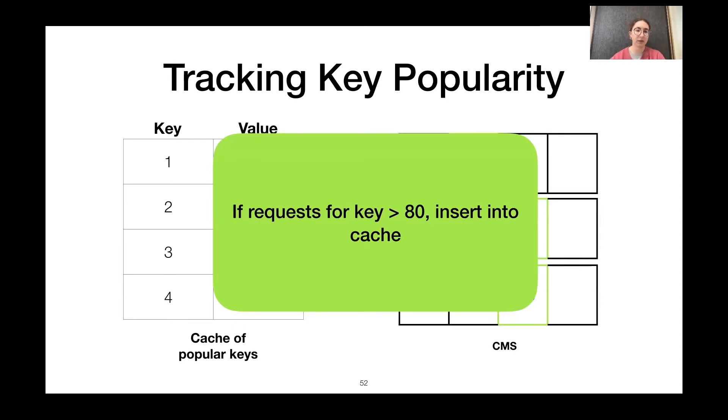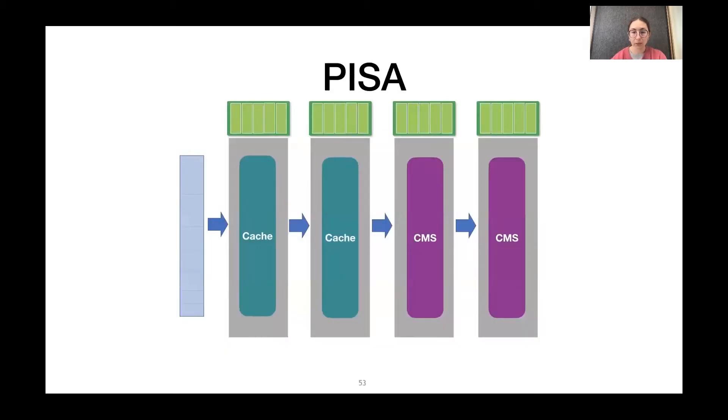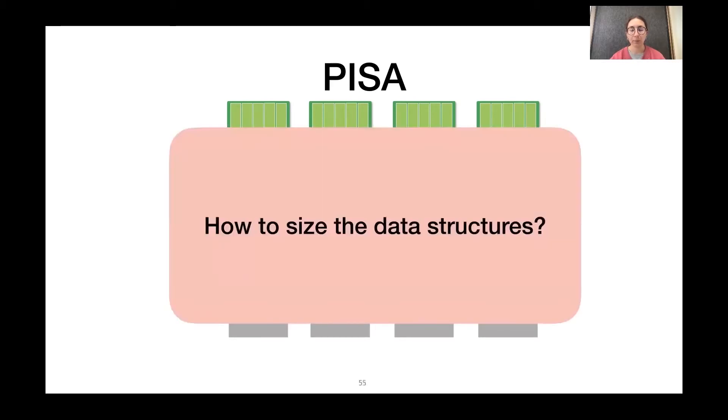So, what does this look like on the switch? Well, one thing we can do is split the resources evenly, give half to the cache and half to the sketch. Or maybe we can decide that it's better for us to have a larger cache to store more keys and a smaller count sketch.